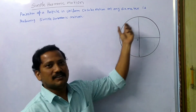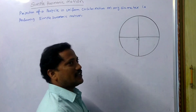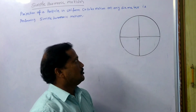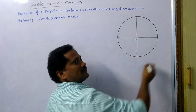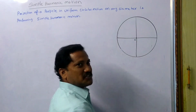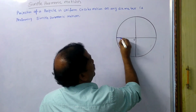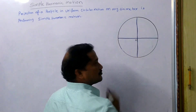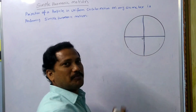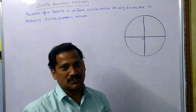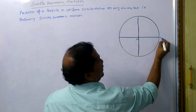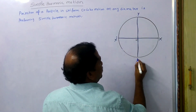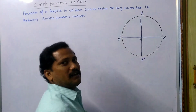First of all, you have to know this is a circle. A circle will have diameter, radius, and everything. Here I am considering a circle with O as the center point. These two are the diameters for my convenience. Now, this circular path can be divided into two coordinate axes — that is the x-x' axis and y-y' axis.